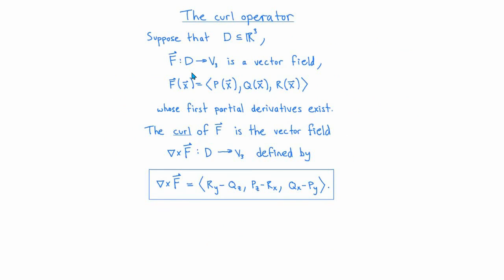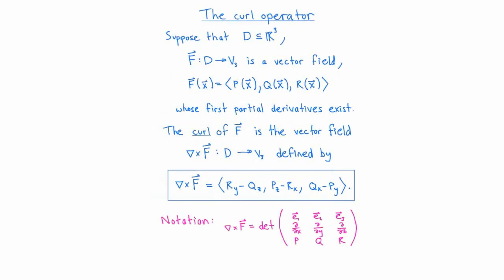Finally, let's talk about the curl operator. Unlike the gradient and divergence operators, the curl is defined only in three dimensions. It takes as input a vector field in three dimensions and outputs another vector field. The notation is ∇×F. If the component functions of F are P, Q, and R, then ∇×F is the vector field whose first component is ∂R/∂y − ∂Q/∂z, with the second and third components given similarly.